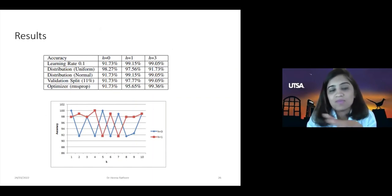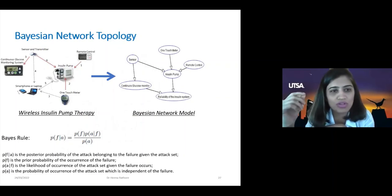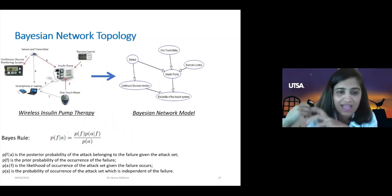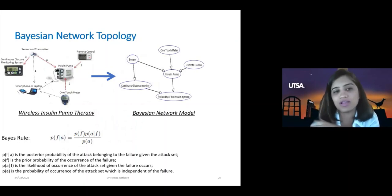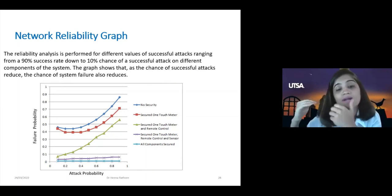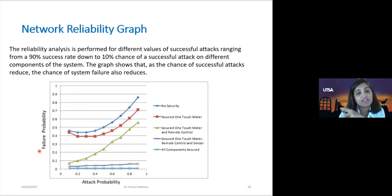I also looked at a Bayesian network topology to model the uncertainty of the environment by looking at failure probability — whether just one link is broken versus all links broken. Bayesian rule was applied to check what happens if one link fails versus all links failing. A network reliability graph demonstrates attack probability versus failure probability. When there was no security, failure probability was high. When all components were secured and attack probability was high, the overall failure probability was very low — ranging from 90% down to 10% chance of a successful attack.